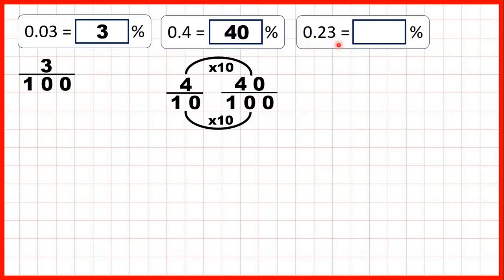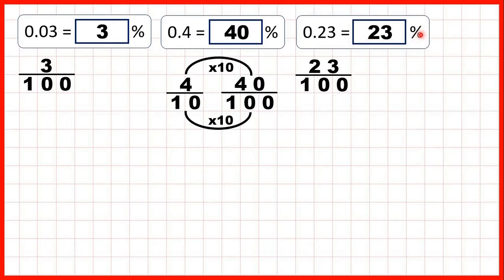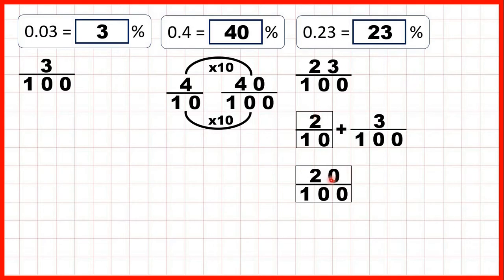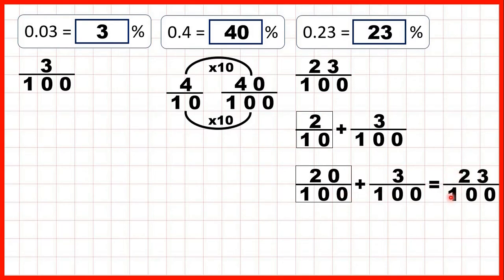Now we have 0.23. As a fraction we can write that as 23 hundredths, because we can draw a line across from the decimal point and because we have two decimal places — and the second decimal place is the hundredths place — we have 23 hundredths. So we can write that as 23 percent. Now 0.23 really means we have two tenths and three hundredths, but to see why that's the same as 23 hundredths we use equivalent fractions: 2 tenths is the same as 20 hundredths, and if we add the three hundredths we get 23 hundredths, because when we add fractions the denominator stays the same.